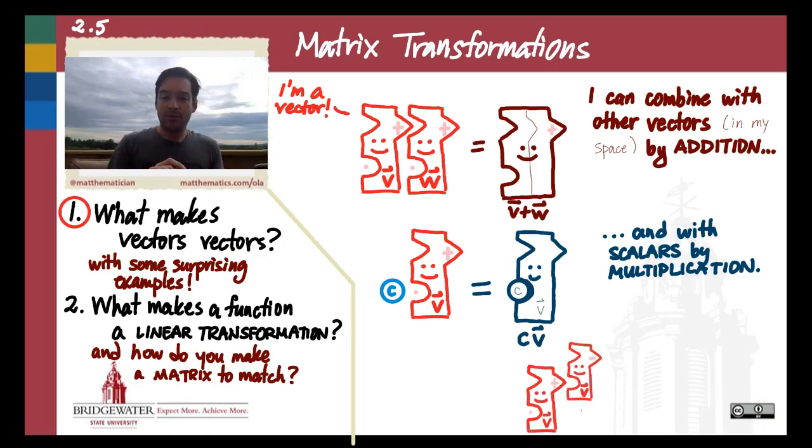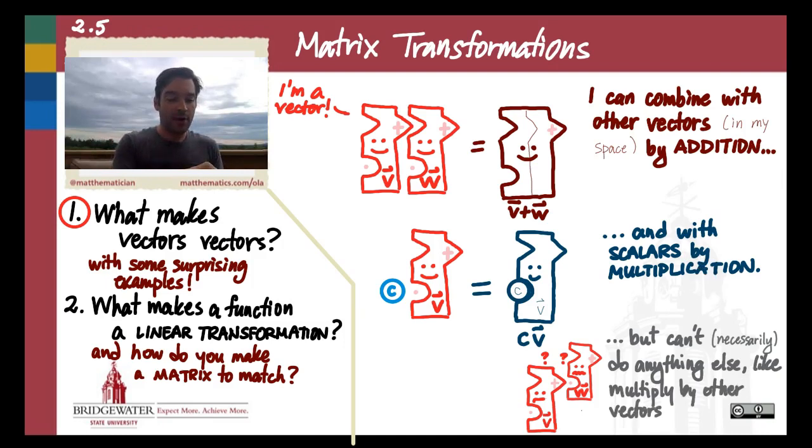One thing that generally we can't do with vectors is we can't necessarily multiply vectors one by another, for example. So there's some arithmetic that vectors are necessarily capable of doing, and there's other arithmetic that they aren't necessarily capable of doing.